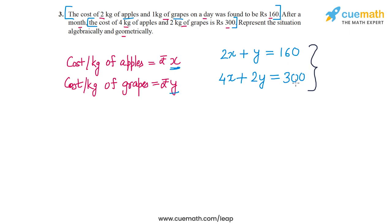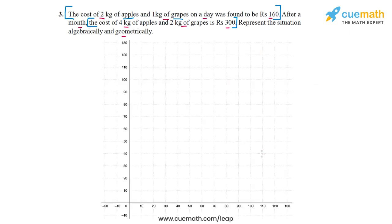This pair of linear equations is the algebraic representation of the given situation. Now we will plot these two equations to represent the situation graphically. Here's our axis with the horizontal axis representing x, the cost per kg of apples, and the vertical axis representing y, the cost per kg of grapes. I'm using a scale of one unit representing 10 rupees on both axes.